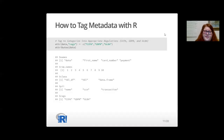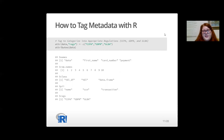We can also tag a dataset to categorize it into its appropriate regulations. Since this dataset contains a name attribute, it is subject to CCPA in California and GDPR in the European Union. Since this dataset also contains payment and credit card information, it is subject to GLBA in the United States, so in total we can tag this dataset as subject to CCPA, GDPR, and GLBA.